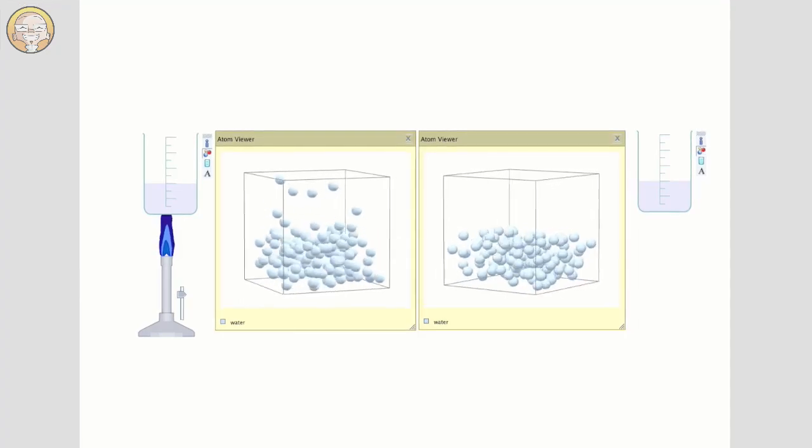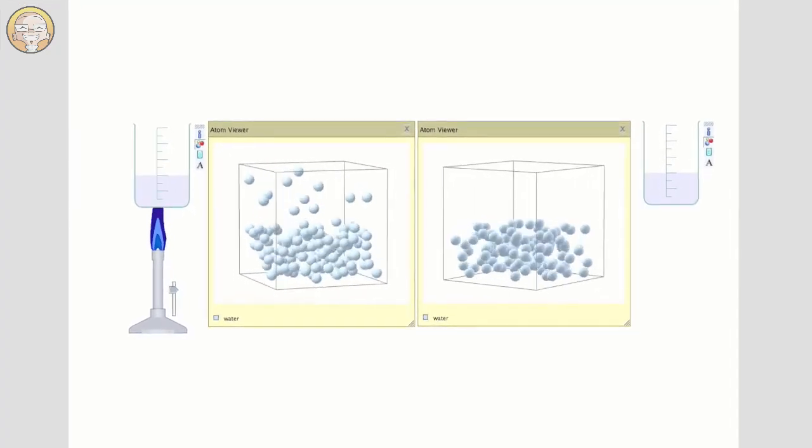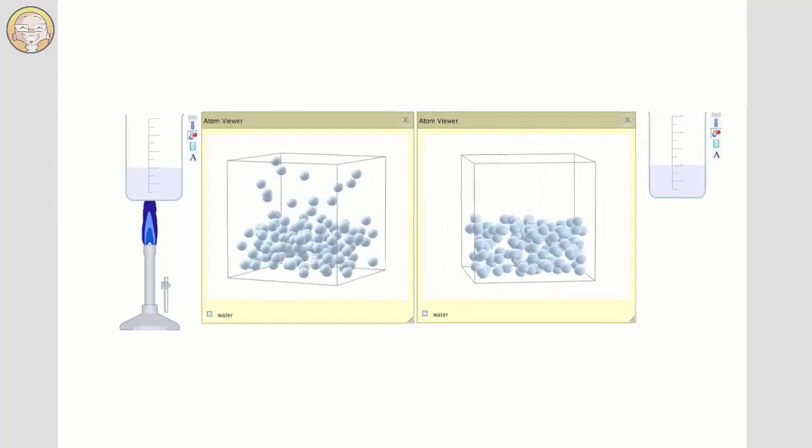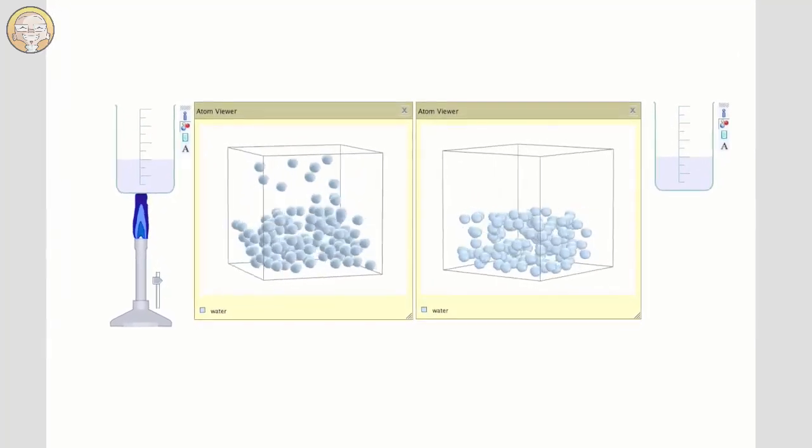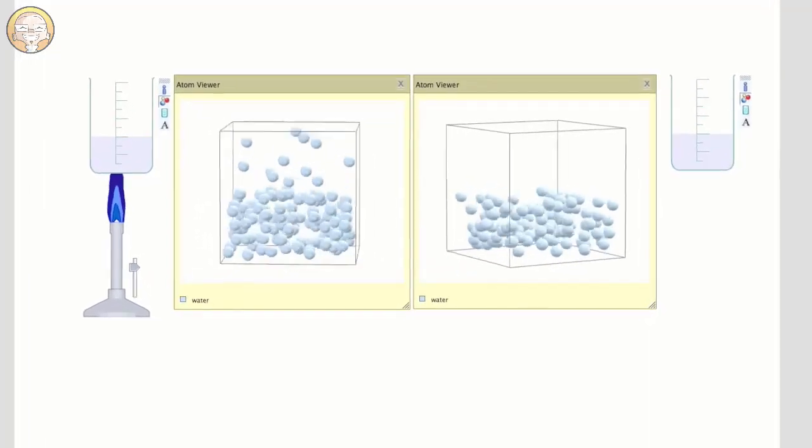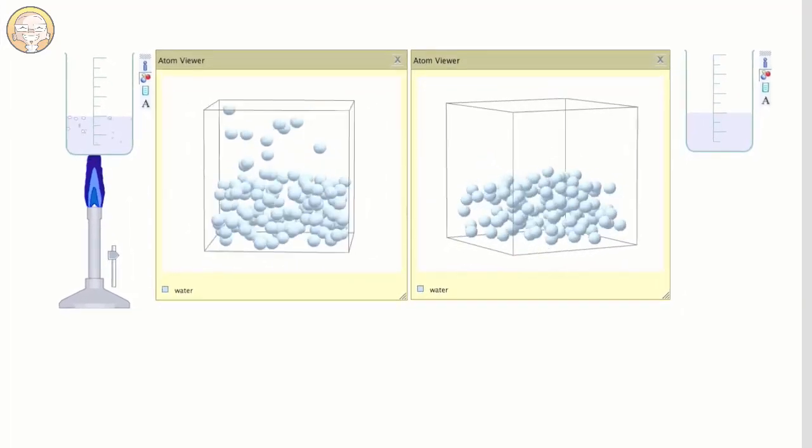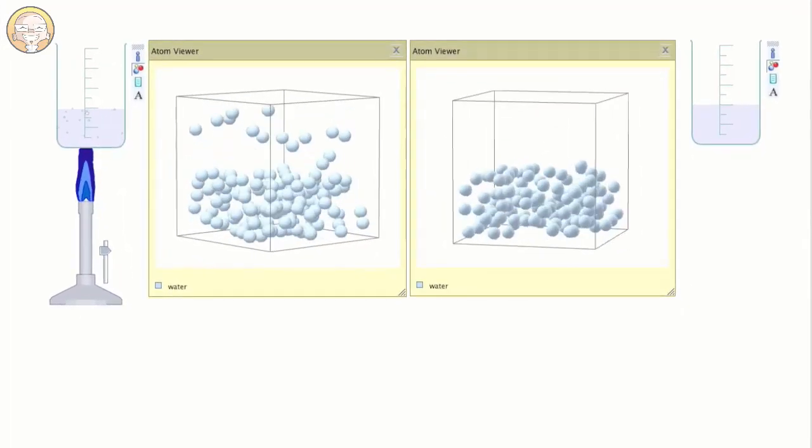They begin to move faster as they gain kinetic energy from the added heat. As the heating continues, the particles move faster and further apart. And some of the particles gain so much energy, they shoot out of the container. The liquid water is changing state into a gas.